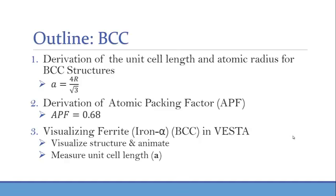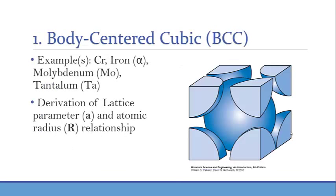Some examples of body-centered materials or metals that are used in engineering include chromium, iron, and tantalum.